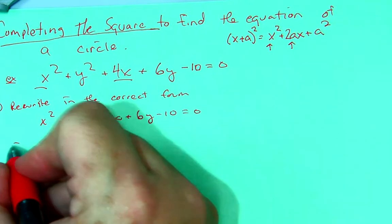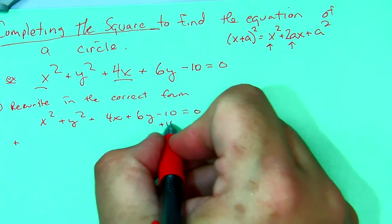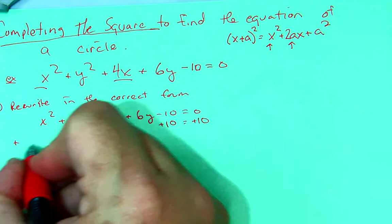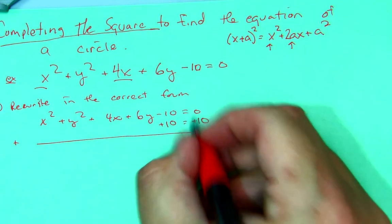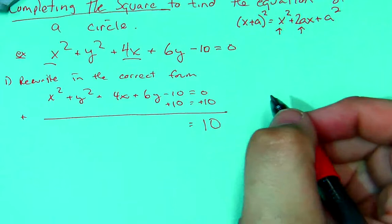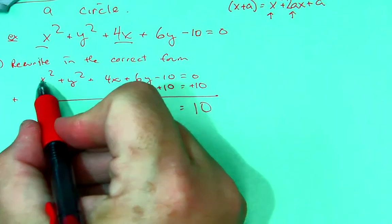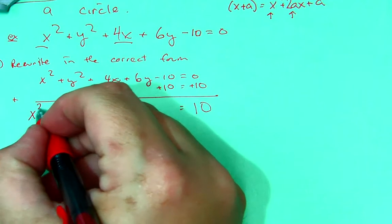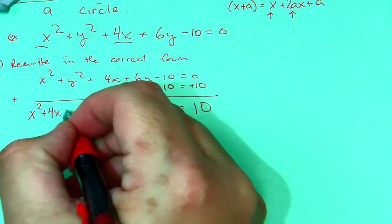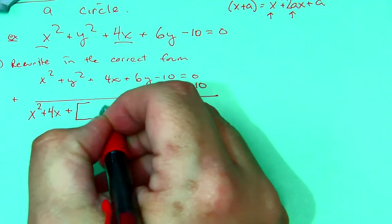The first thing I'm going to do is add 10 to both sides. So, I'll get 10 on the right-hand side. But now what I want to do is put my x squared plus 4x over here, and I'm going to say it's going to be plus some number.